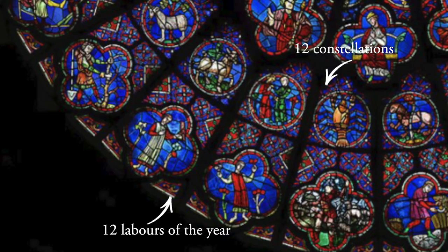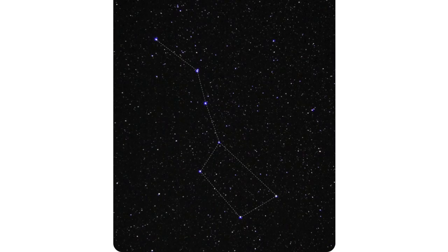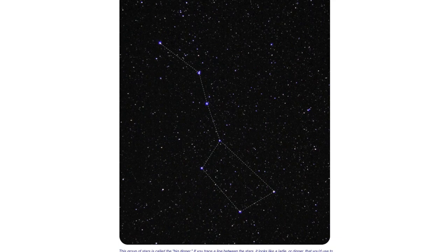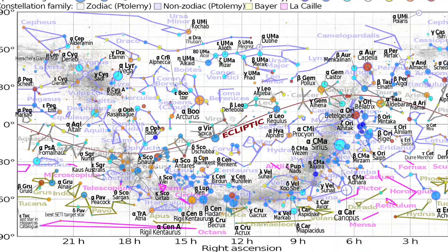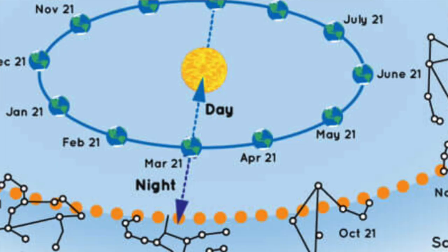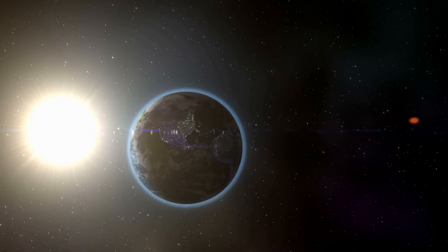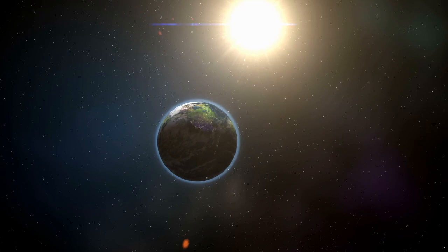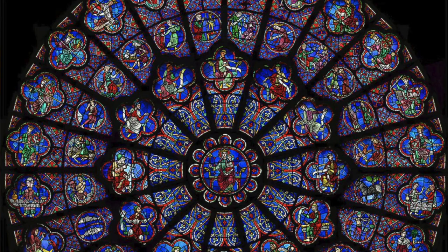Constellations are a group of stars named based on the patterns they form, and there are 88 recognized constellations. The 12 constellations that form the zodiac are those that the sun appears to pass through in a circular path from the perspective of the Earth, which orbits the sun once a year. Constellations of the sky are parallel to the labors of the year — the time it takes the Earth to go through those 12 constellations is a year, which is also divided into 12 months.